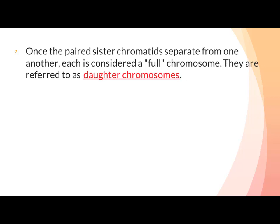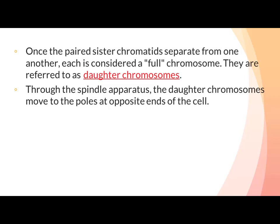They are referred to as daughter chromosomes۔ اب یہ جو daughter chromosomes ہیں، spindle fibers کی contraction کی وجہ سے یہ opposite poles کی طرف روانہ ہو جاتے ہیں۔ Through the spindle apparatus, the daughter chromosomes move to the poles at opposite ends of the cell.